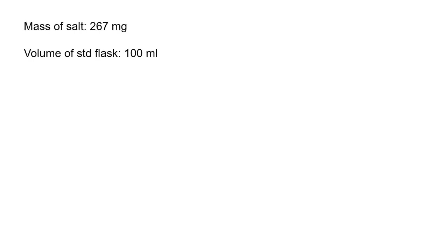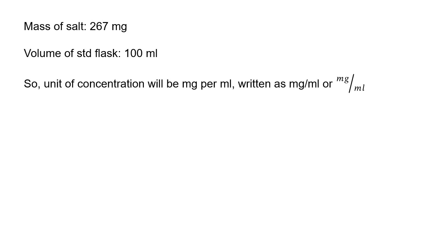As always with concentration calculations, the units are going to give us the main formula we need to use. It makes most sense to use units of concentration that reflect the units used to measure both the salt and the volume of liquid it's dissolved in. The mass of the salt was 267 milligrams and the volume of the standard flask was 100 millilitres, so the most obvious unit of concentration is milligrams per milliliter — written as mg over ml, which is just a fraction. To calculate the numerical value, you just divide the number on top by the number on the bottom. So this unit for concentration is telling us that concentration equals milligrams divided by millilitres — the units really are giving us the equation we need.